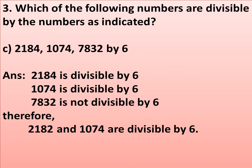For part c, 2184 is divisible by 6. The divisibility rule for 6 is: if the digit sum is divisible by both 2 and 3, the number is divisible by 6. The digit sum of 2184 is 2 + 1 + 8 + 4 = 15, which is divisible by 3. So 2184 is divisible by 6. Similarly, 1074 is divisible by 6, but 7832 is not. Therefore, the numbers divisible by 6 are 2184 and 1074.